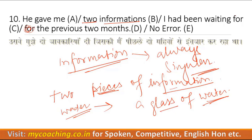तो हम यहाँ 'piece' क्यों लगाएंगे? इसलिए कि 'information' अनकाउंटेबल है। तो इसका उपाय क्या है? जब हमें इसे गिनना हो, तो हमें 'a piece of' या 'two pieces of' लगाना होगा — यही logic है।